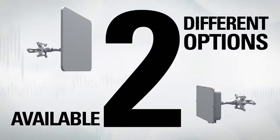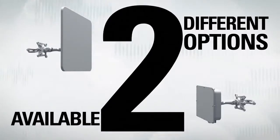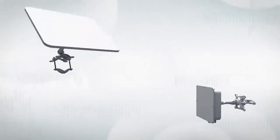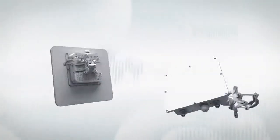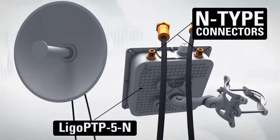LIGO PTP PRO equipment is available in two different options. With an integrated dual polarized 23 DBI antenna and with external end connectors for your own antenna.